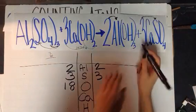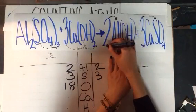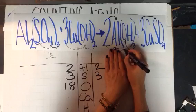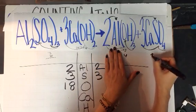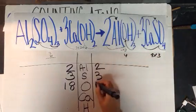And how about on this side? I have three oxygens here and two here. So two times three is six. And then I have four and three, which is twelve, so I also have eighteen.